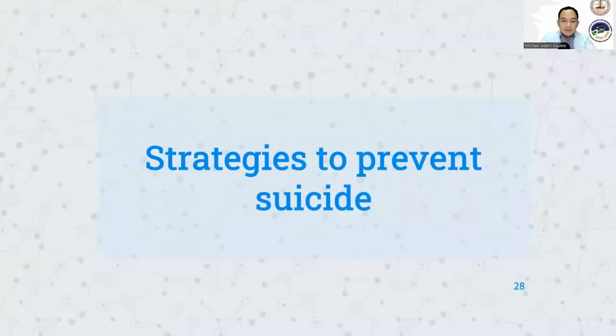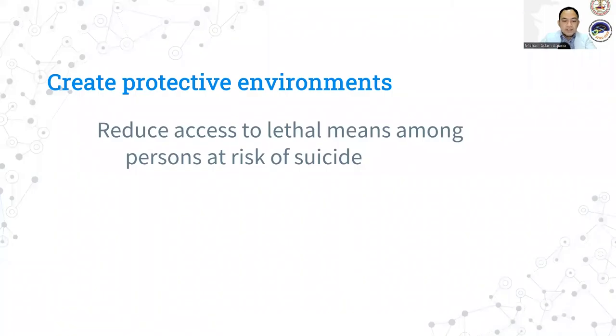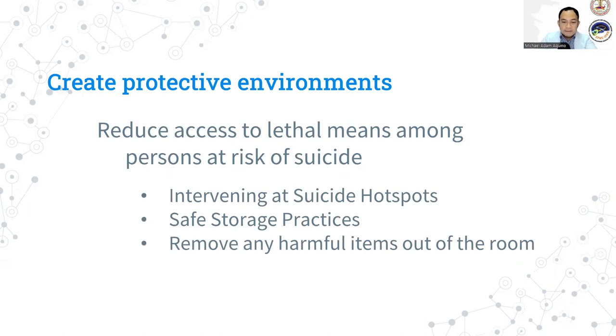So what are the strategies to prevent suicide? First is we create protective environments. This means reducing access to lethal means among persons at risk of suicide. Means of suicide such as firearms, hanging or suffocation, or jumping from heights provide little opportunity for rescue and as such have a high case fatality rates. So what we do is we intervene at suicide hotspots or places where suicides may take place easily. This includes tall structures such as bridges, cliffs, balconies, or rooftops. Efforts to prevent suicide at these locations include putting up barriers or limiting access of the individual to prevent them from jumping and installing signs and telephones to encourage individuals who are considering suicide to seek help.